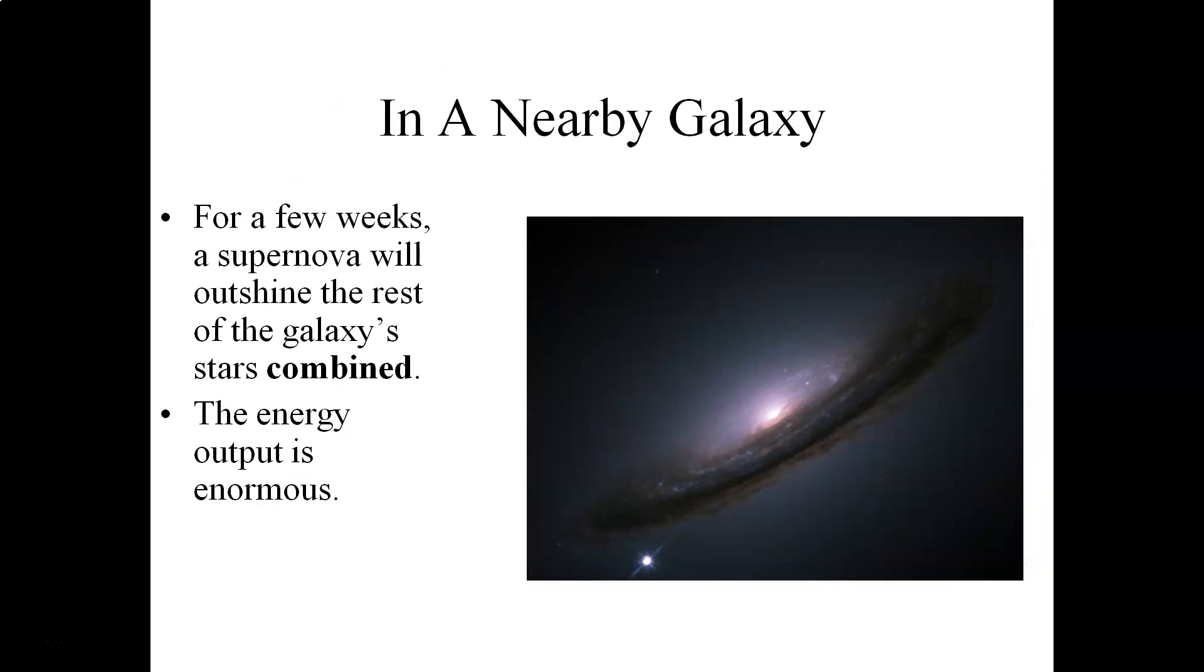Here's a nice example of a supernova explosion that took place relatively recently in a nearby galaxy. For a few weeks, because of the energy that is being released during the supernova explosion itself, the supernova will actually outshine the rest of the galaxy's stars combined. So right here is basically a single star undergoing a supernova explosion. Compare its brightness compared to all of these stars, all of the fuzz that you see right here making up the rest of the spiral arms of this particular galaxy.